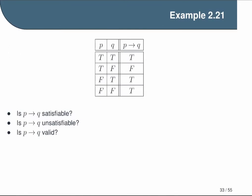Is the formula valid? Validity means it's true for every possible assignment, and we can see this is not the case. If we assign p to true and q to false, then the formula evaluates to false. So this is not valid. Finally, is it falsifiable? This means there is an interpretation that causes it to evaluate to false — we just showed that there is one. So this is certainly falsifiable. Just like satisfiability and unsatisfiability, validity and falsifiability are negations of each other.